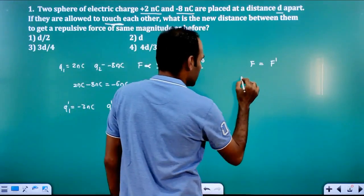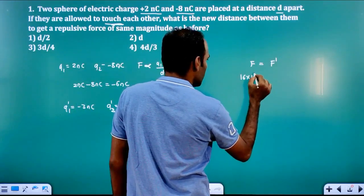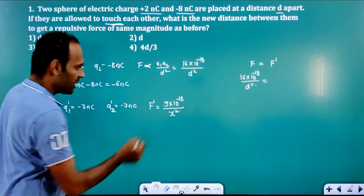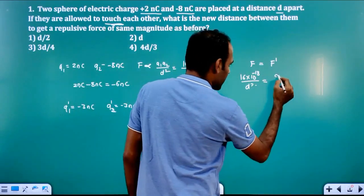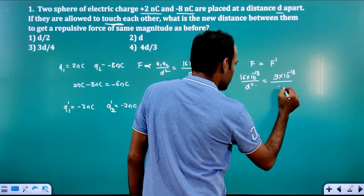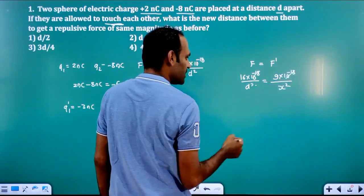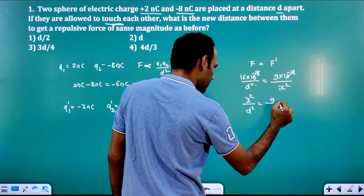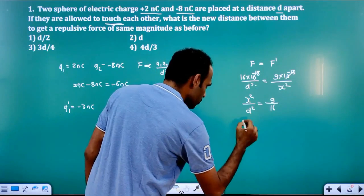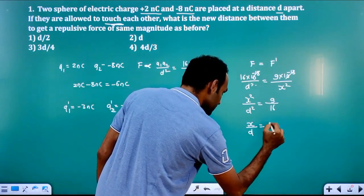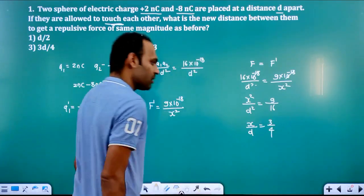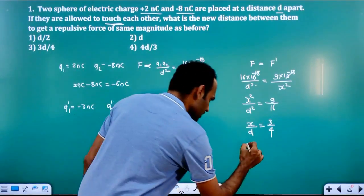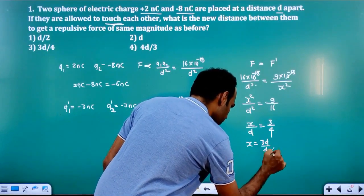The 10 raised to minus 18 cancels on both sides. So x square divided by D square equals 9 divided by 16. Taking square roots on both sides, x divided by D equals 3 divided by 4. Therefore x equals 3D divided by 4. That is the new distance between the spheres.